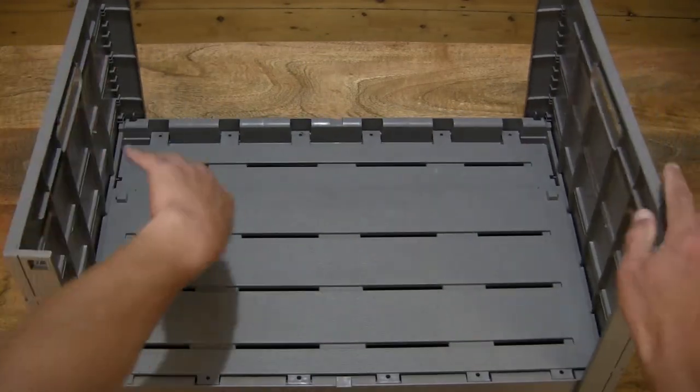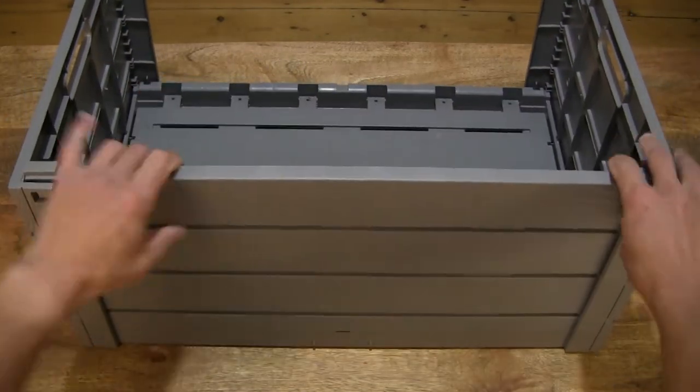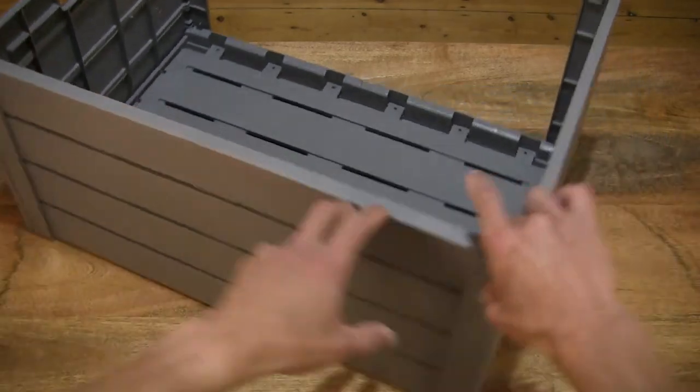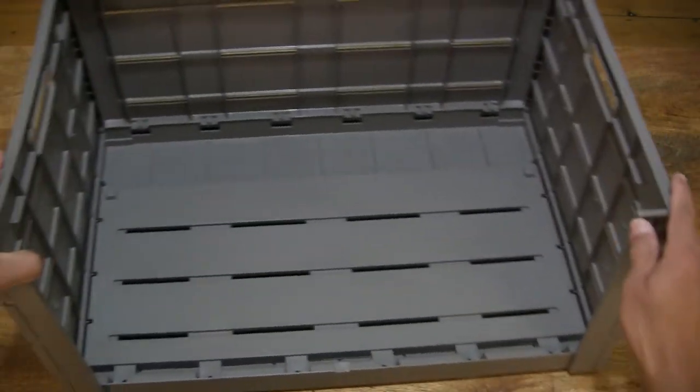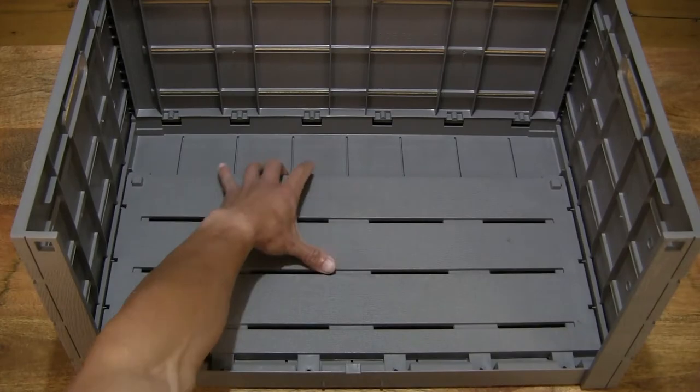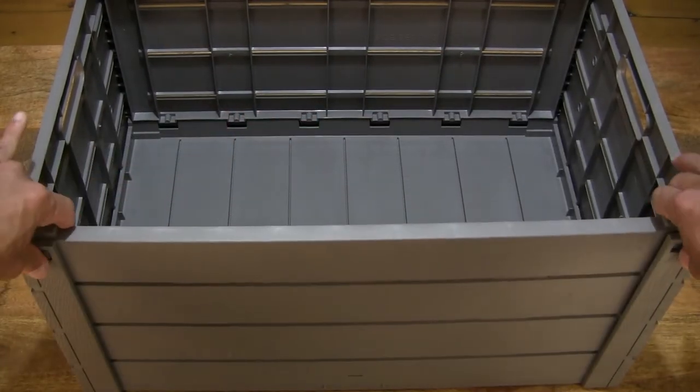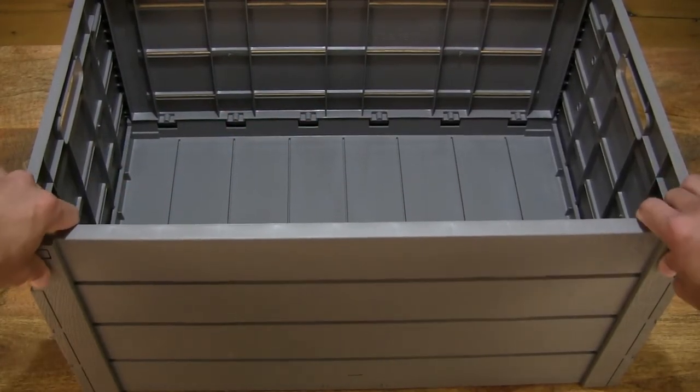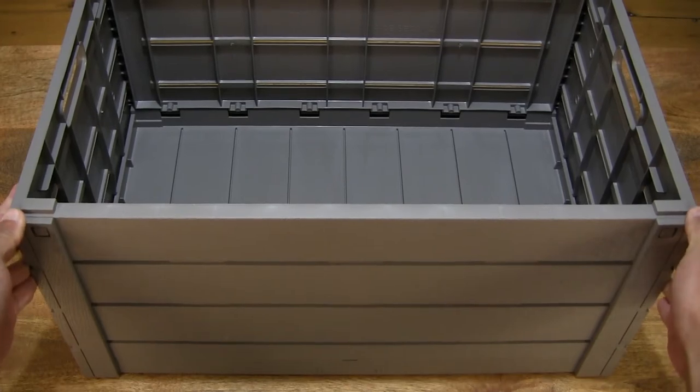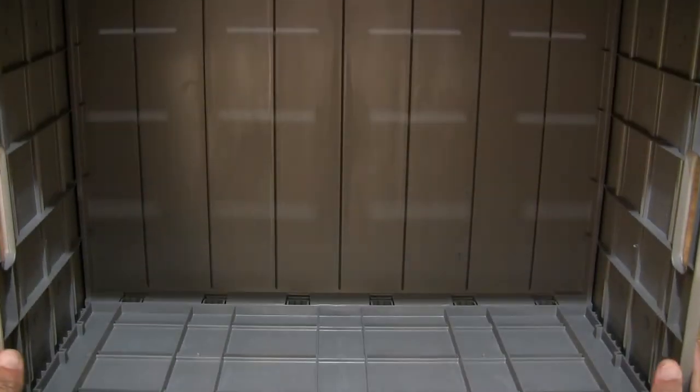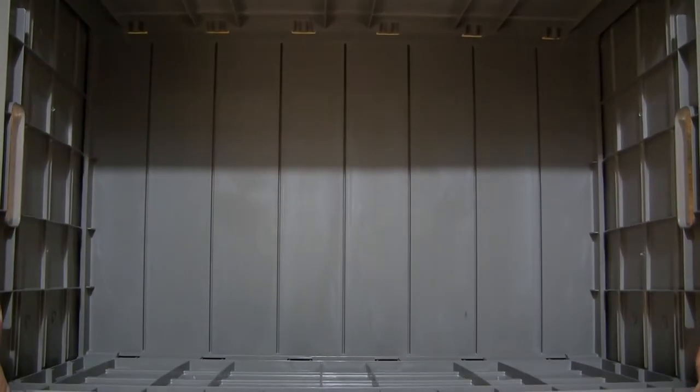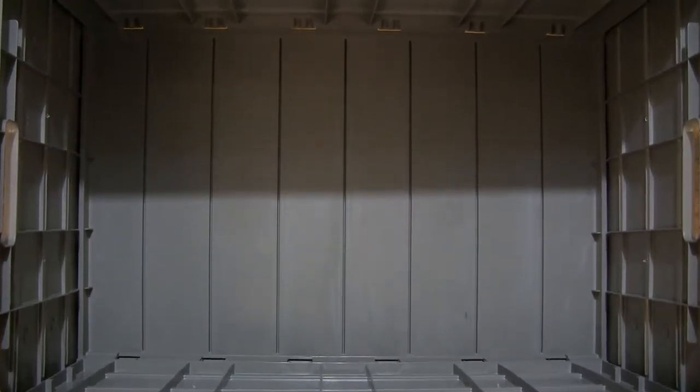And then pulling out and clipping the long sides against the shorter sides or panels of the crate. Just giving you a look inside, it's 60 litre capacity.